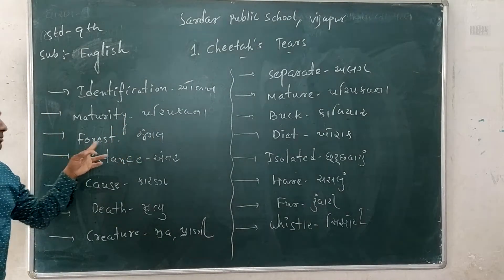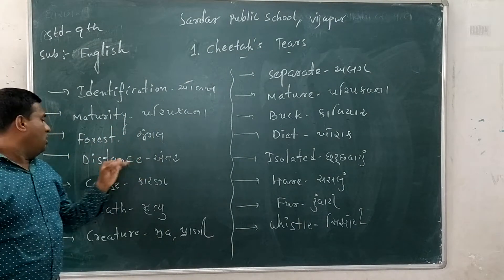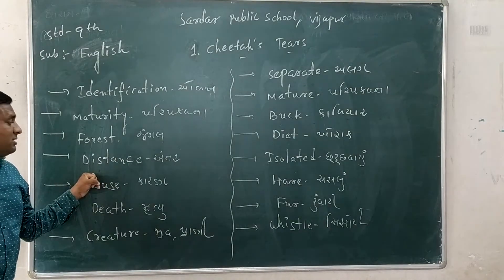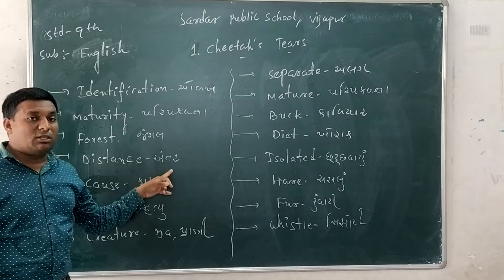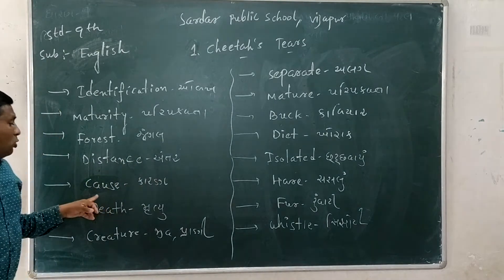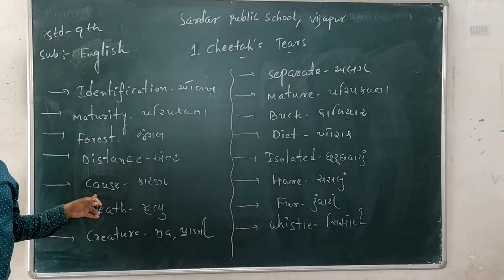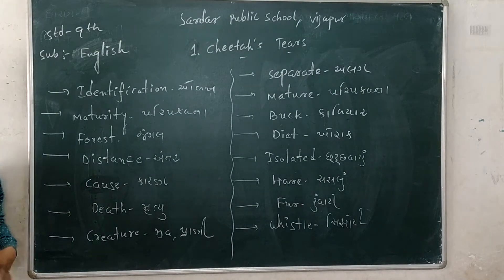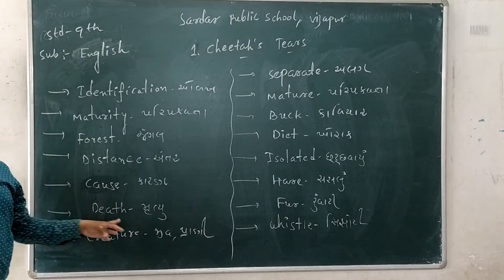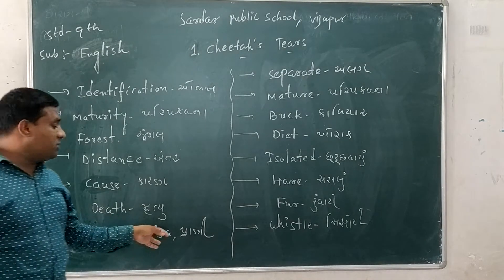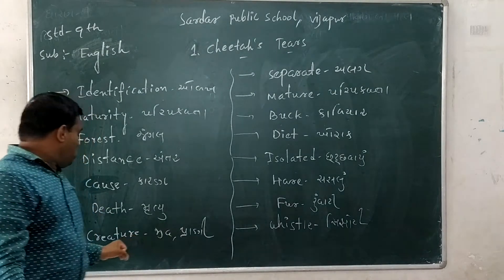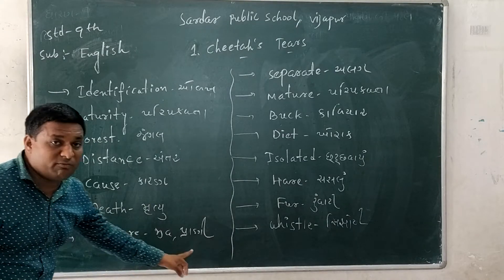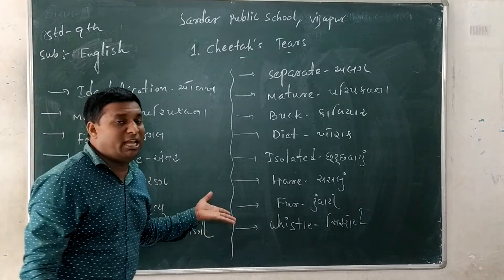Forest — F-R-E-S-T — means jungle. Distance — C-N-C — distance means under. Post — C-A-U-S-P — Post means car. Death — D-E-A-T-S-N — means nuttyo. Creature — C-R-E-T-U-I — Creature means Prani, it's an animal here.